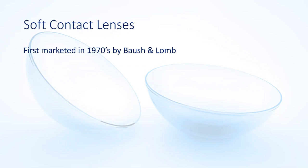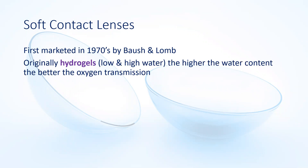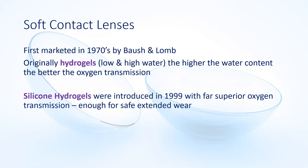Bausch & Lomb first came along with soft contact lenses in the 70s. Originally they were hydrogels, using water as a means to transmit oxygen through to the cornea to make them healthier. You had different water contents — low water, high water, and later mid-water lenses. Essentially, the higher the water content, the more oxygen came through to the cornea, which is what we want — we want the cornea to breathe. Then, later on in 1999, we developed silicon hydrogels. Most patients have now transferred over to wearing these silicon hydrogel lenses.